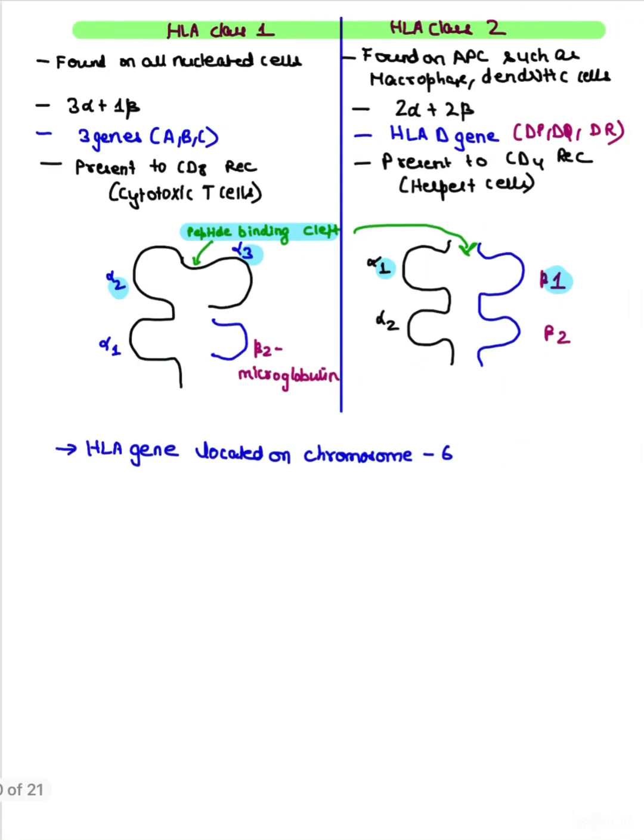Now let's get started. First of all, we will read about HLA molecules. We have HLA class 1 and HLA class 2. HLA class 1 is present on all nucleated cells and HLA class 2 is present on antigen presenting cells like macrophages, dendritic cells, and B cells. HLA class 1 has three alpha molecules and one beta molecule.